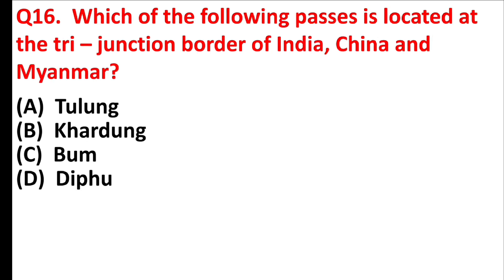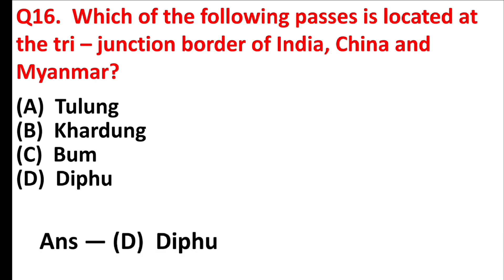Which of the following passes is located at the tri-junction border of India, China, and Myanmar? Answer is option D: Diphu.